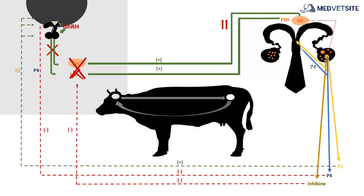Progesterone also has an influence on the mucous membrane of the uterus, preparing it to receive an embryo and to maintain or nourish it during the first days of gestation.